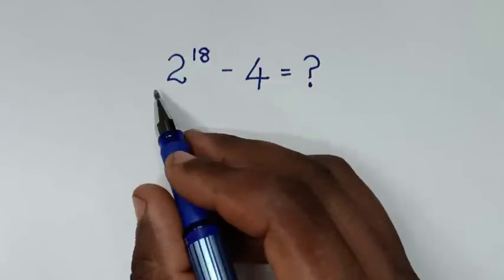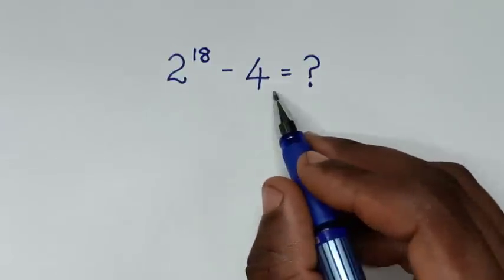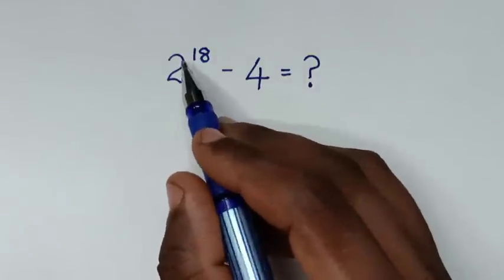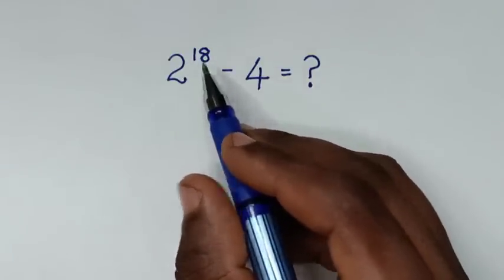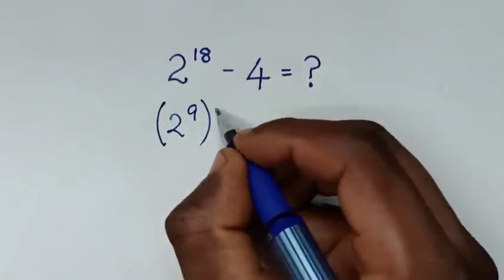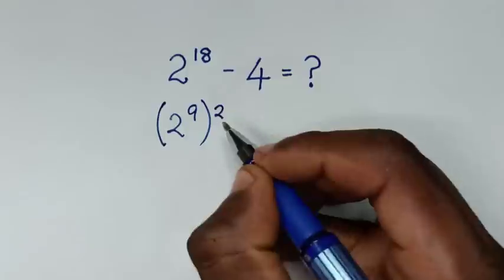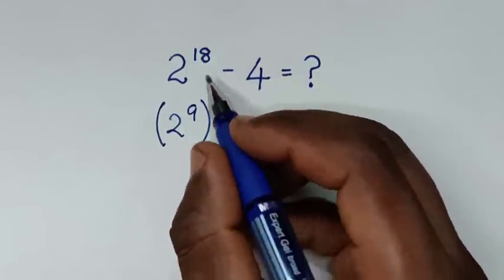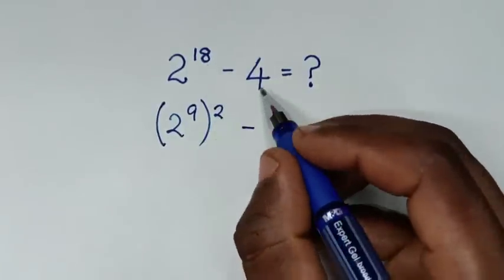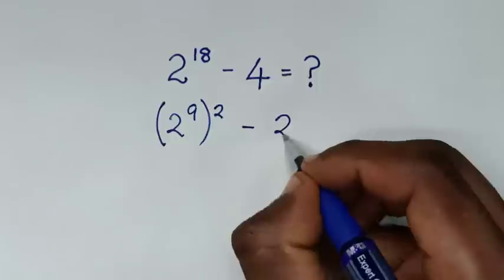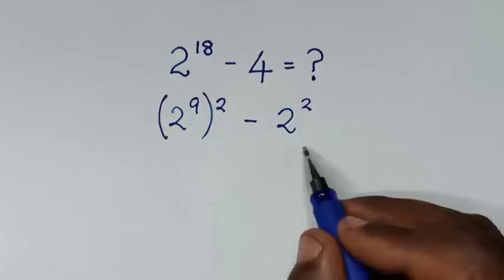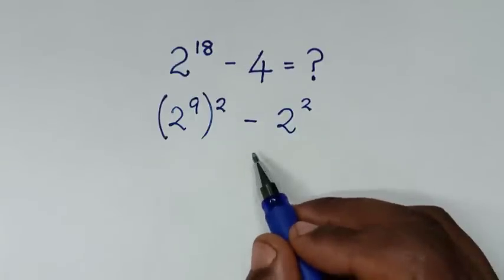Now in the first step, we'll make this expression in the form of a perfect square. So 2 power of 18 in square form is the same as (2 power of 9) bracket squared, because power of 9 times 2 is power of 18. Then minus 4 in square form is 2 squared. Now this is in the form of a perfect square.